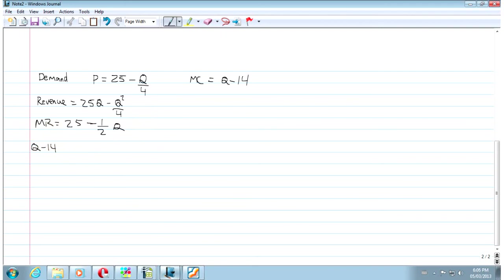Q minus 14 equals 25 minus 1 half Q. 1.5Q equals 39, which means that Q equals 26. So, good news, we got a positive quantity.